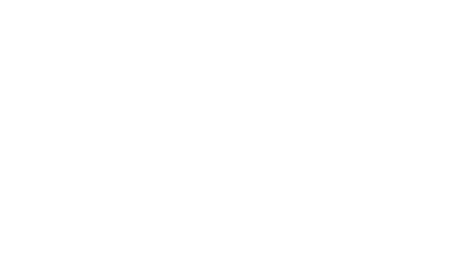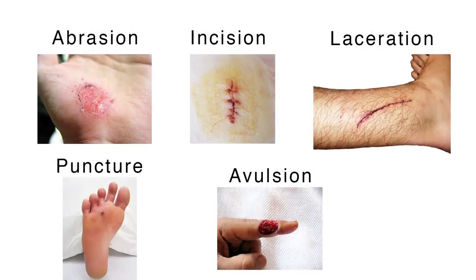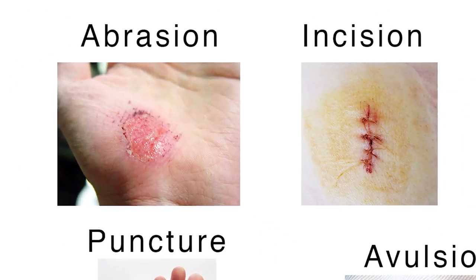There are five different types of open wounds classified according to their cause. First, abrasion occurs when skin rubs or scrapes a rough or hard surface, as in road rash. Not usually a lot of bleeding, but it needs to be scrubbed and cleaned to avoid infection.